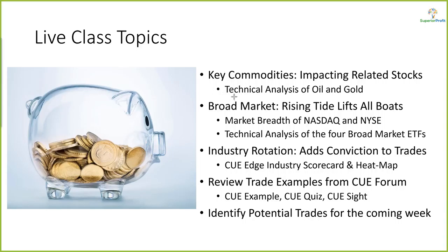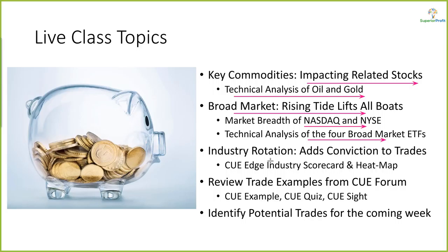As usual, we will look at oil and gold using technical charts, as they tend to impact related stocks. When we take swing trades, we like to align them with the broad market. We try to understand the market's direction using market breadth of NASDAQ and NYSE and also technical charts of the broad market ETFs. We will also align trades with industry strength and weakness, studying that using industry scorecard and heatmap.